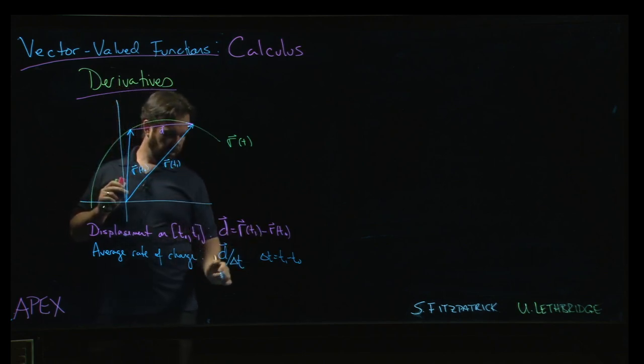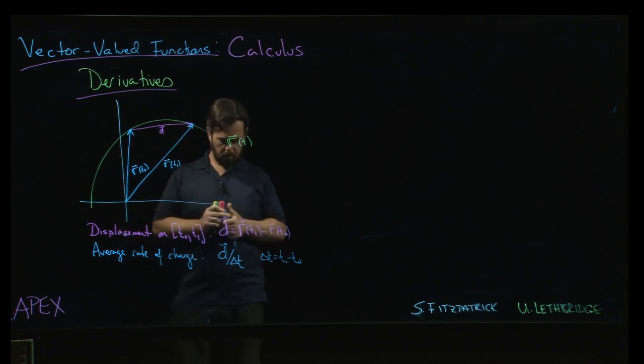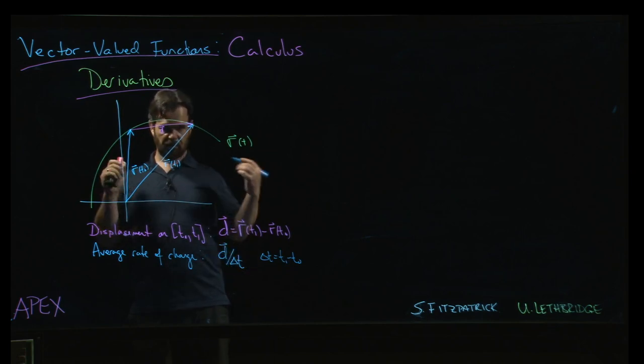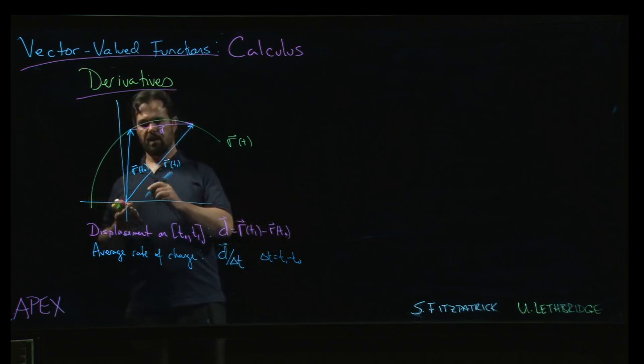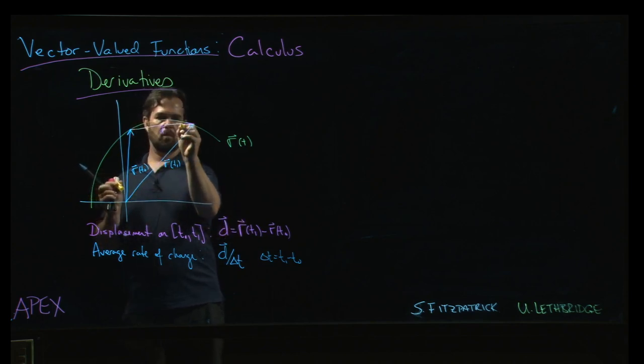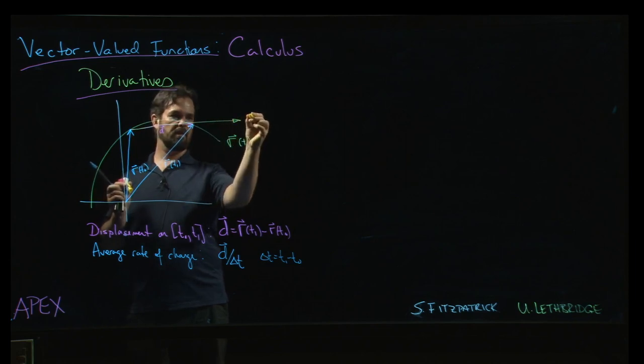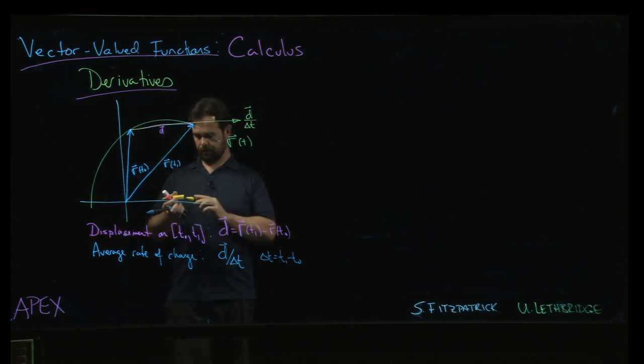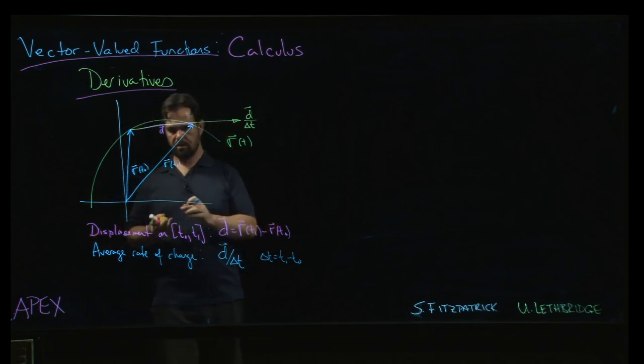Well, actually if that difference is less than one, we're dividing by a number less than one, so we're getting something bigger than one, right? So then the average rate of change might look something more like this. So that might be d over delta t.